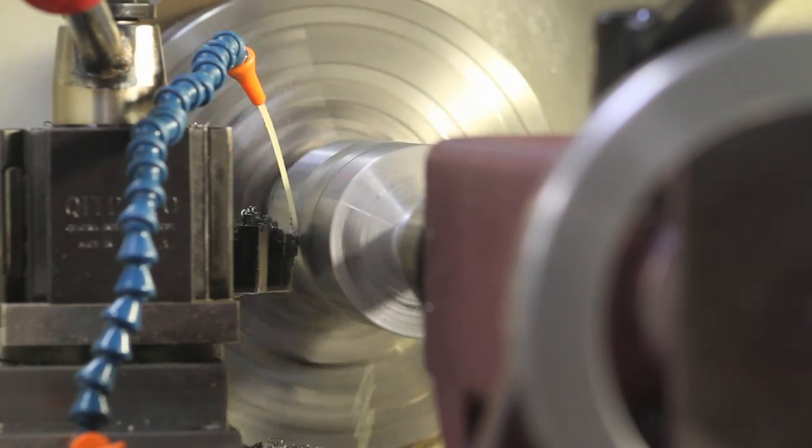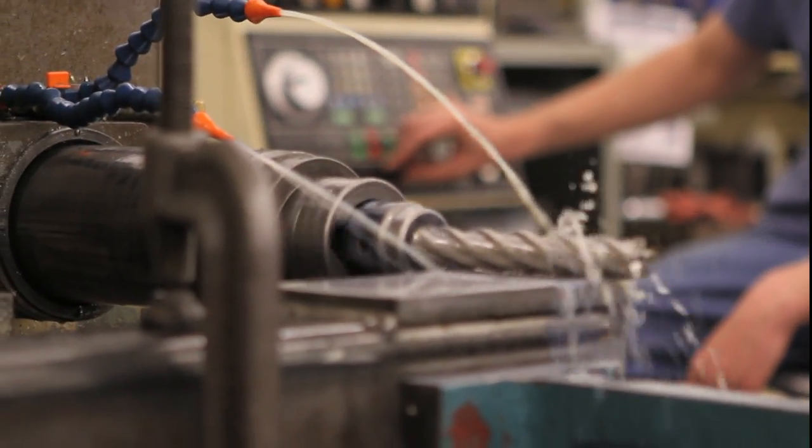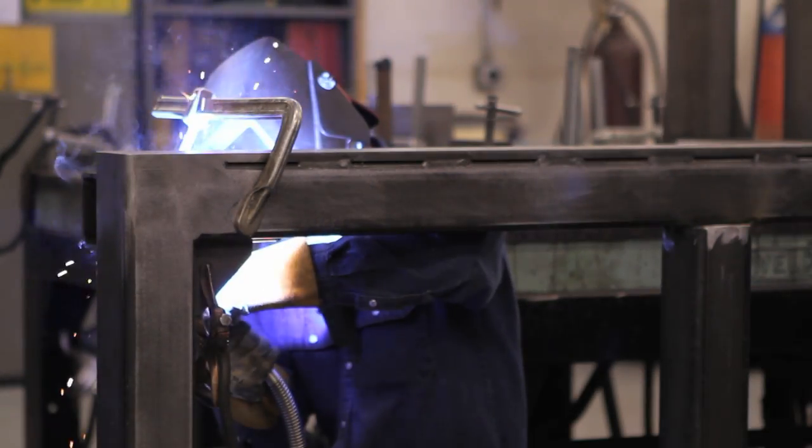Purbix boasts a full CNC milling and turning lineup with full four-axis capabilities, and our large-format machining and welding is done within our own facility.